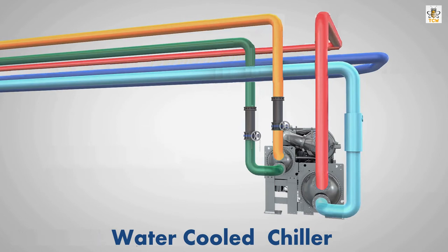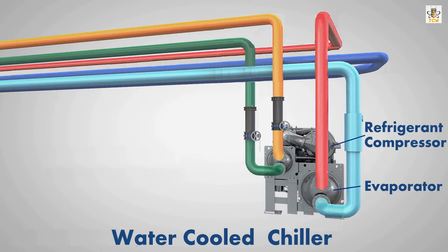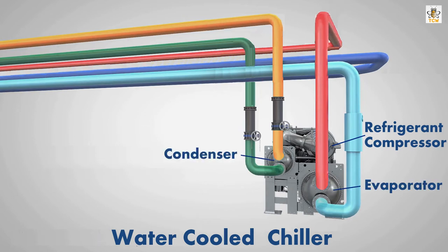A water-cooled chiller has two metal tanks connected with a compressor. The tank below is called the evaporator — this is where chilled water is cooled. The tank above is called the condenser — this is where heat is transferred to the condenser water.